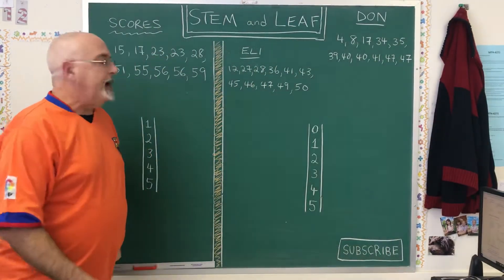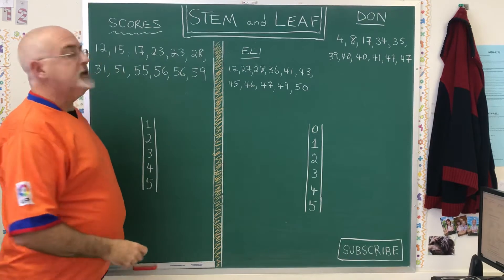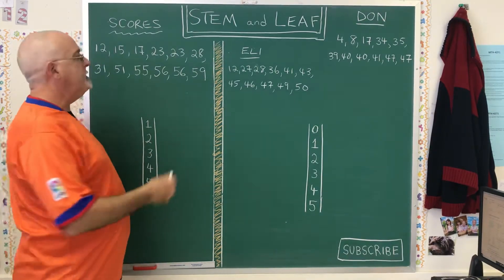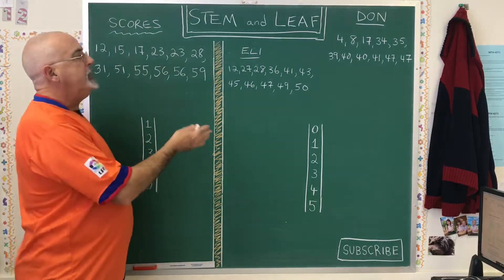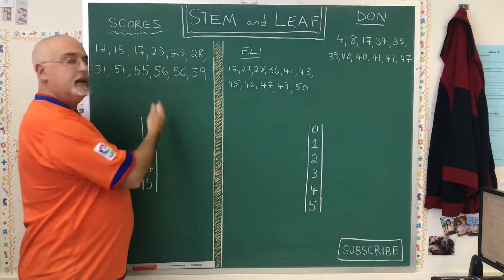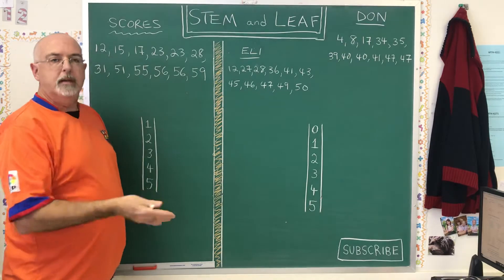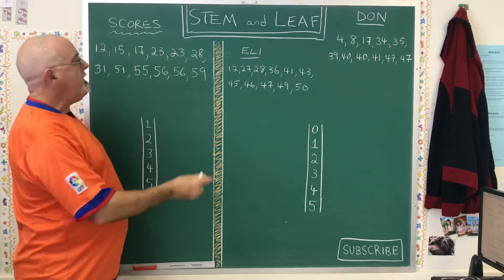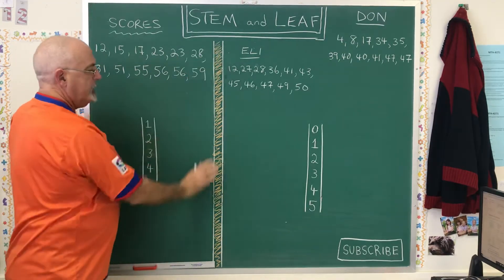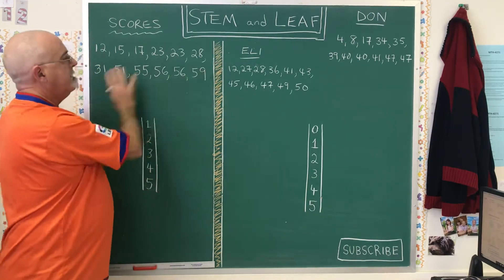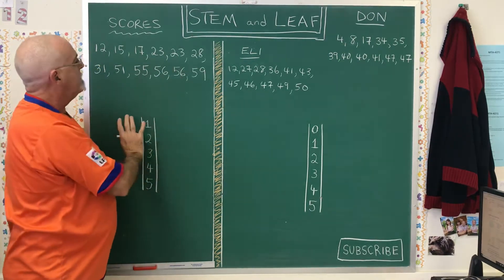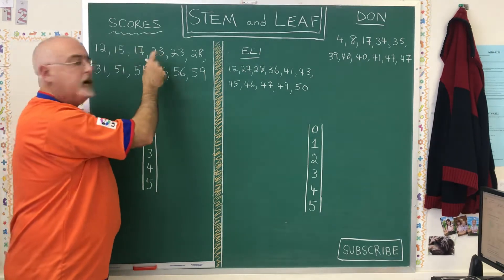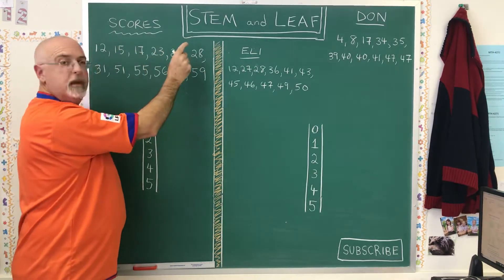In today's Daily Dose of Math, we're looking at stem and leaf tables. A stem and leaf table is a way of presenting data that makes it easier to read. On the left side of this chalkboard, I have a set of data with the title 'Scores.'